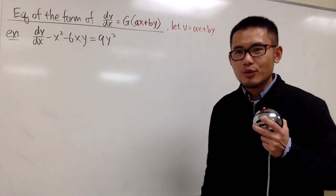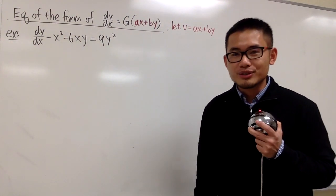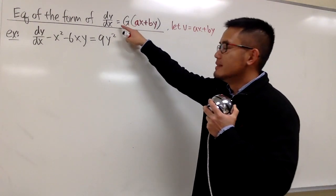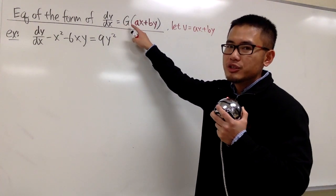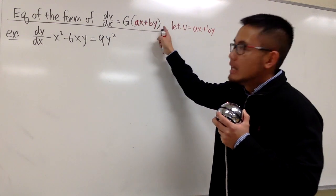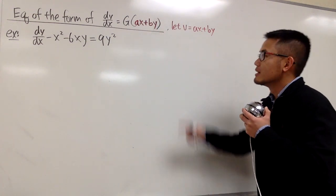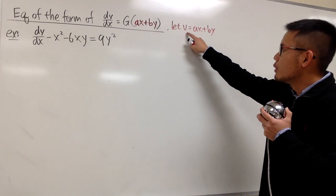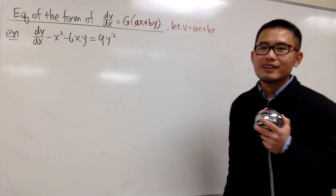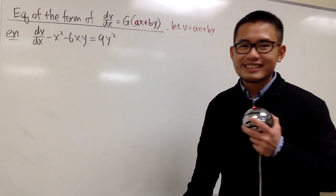Let's talk about another special form of differential equation where we still use a substitution to solve. It is the equation in the form dy/dx = g(ax + by). If this is the situation, we are going to let v as our new variable to be ax + by — that's the input. Here I have an example to demonstrate how it works.